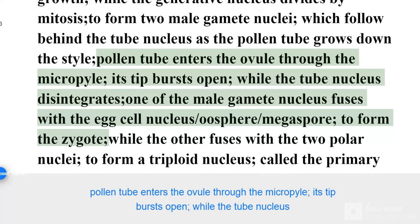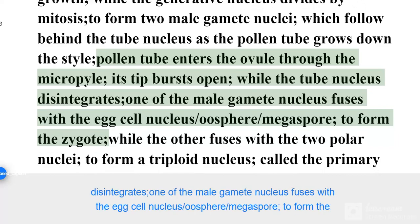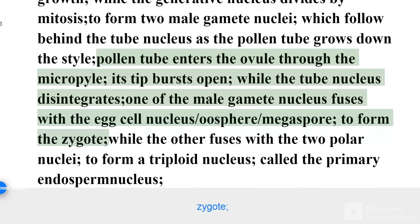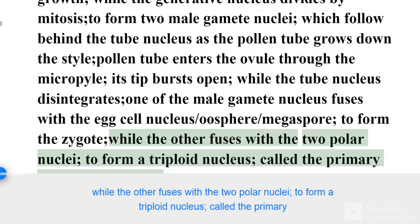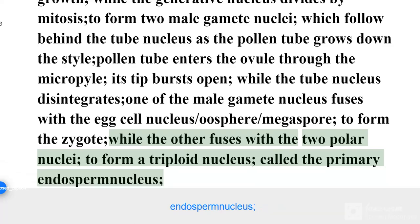The pollen tube enters the ovule through the micropyle. Its tip bursts open while the tube nucleus disintegrates. One of the male gamete nuclei fuses with the egg cell nucleus (oosphere/megaspore) to form the zygote, while the other fuses with the two polar nuclei to form a triploid nucleus called the primary endosperm nucleus.